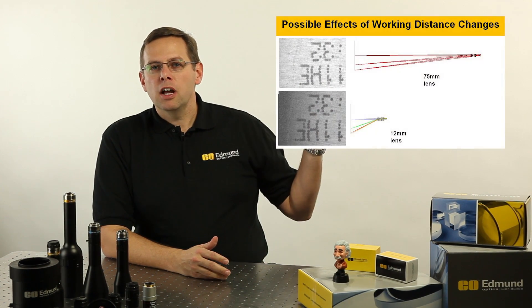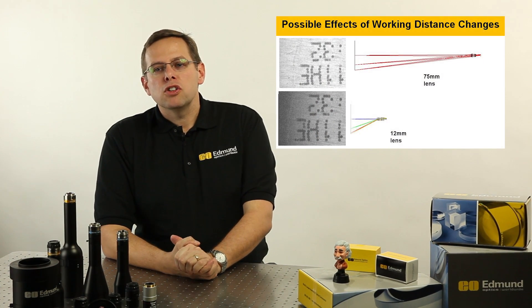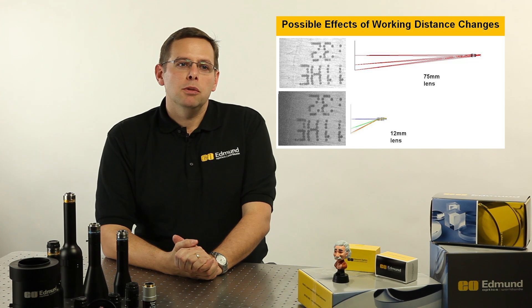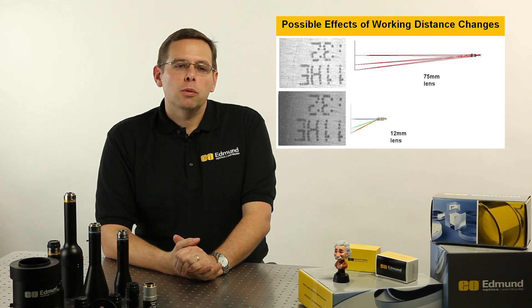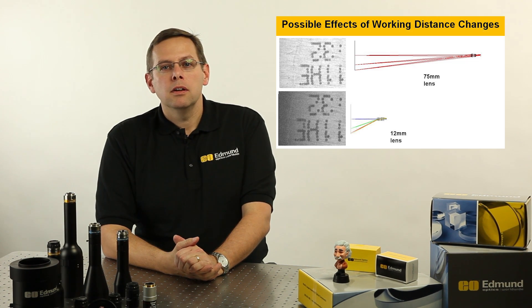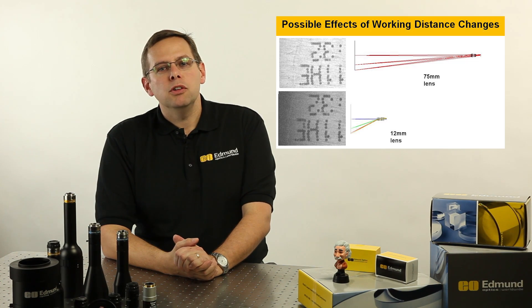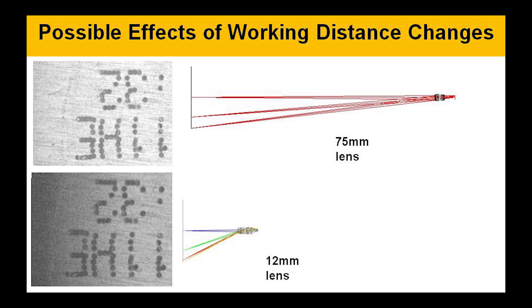Other things that come into play that can affect working distance — as you can see from the slides here, there is some information shown about a soup can that was actually imaged. In this application, we were looking for the printing on the top of the can. You'll see that there are two different images there with different levels of clarity and image quality relating to the lighting and the resolution that was able to be obtained. The only difference between these two systems is actually the working distance of the lens that was chosen. One was much more forgiving on the resolution quality and the light collecting ability of the system and produced much better results.